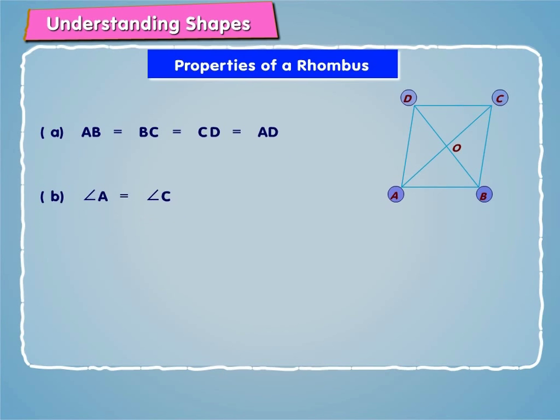Angle A is equal to angle C and angle B is equal to angle D. Diagonals AC and BD bisect each other at O.